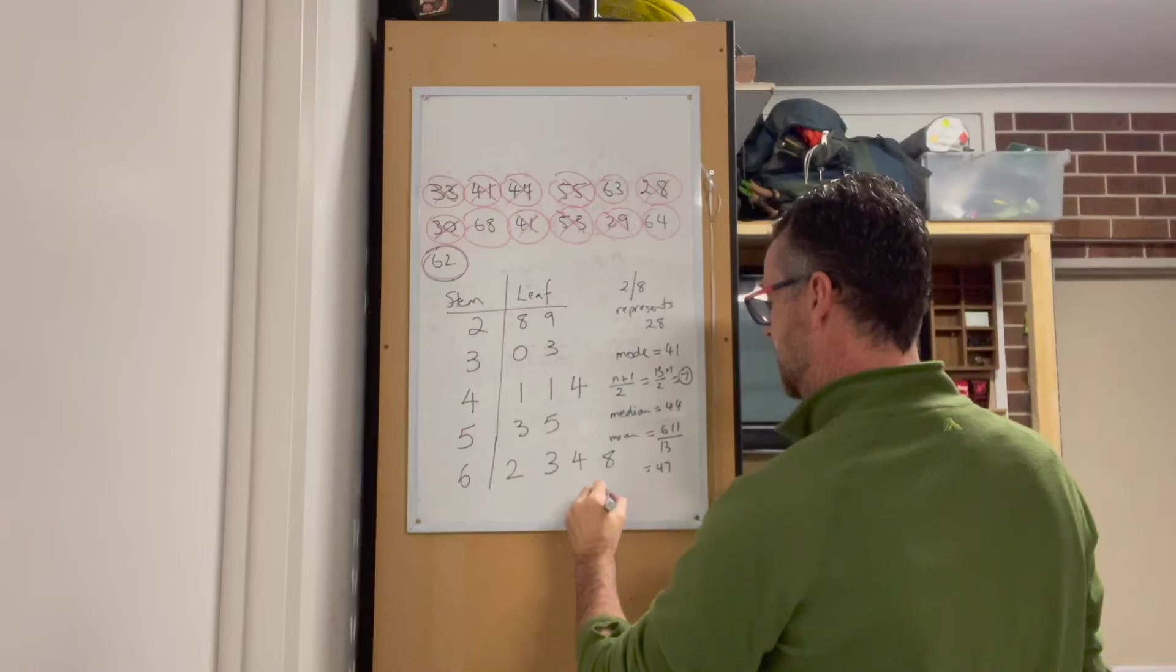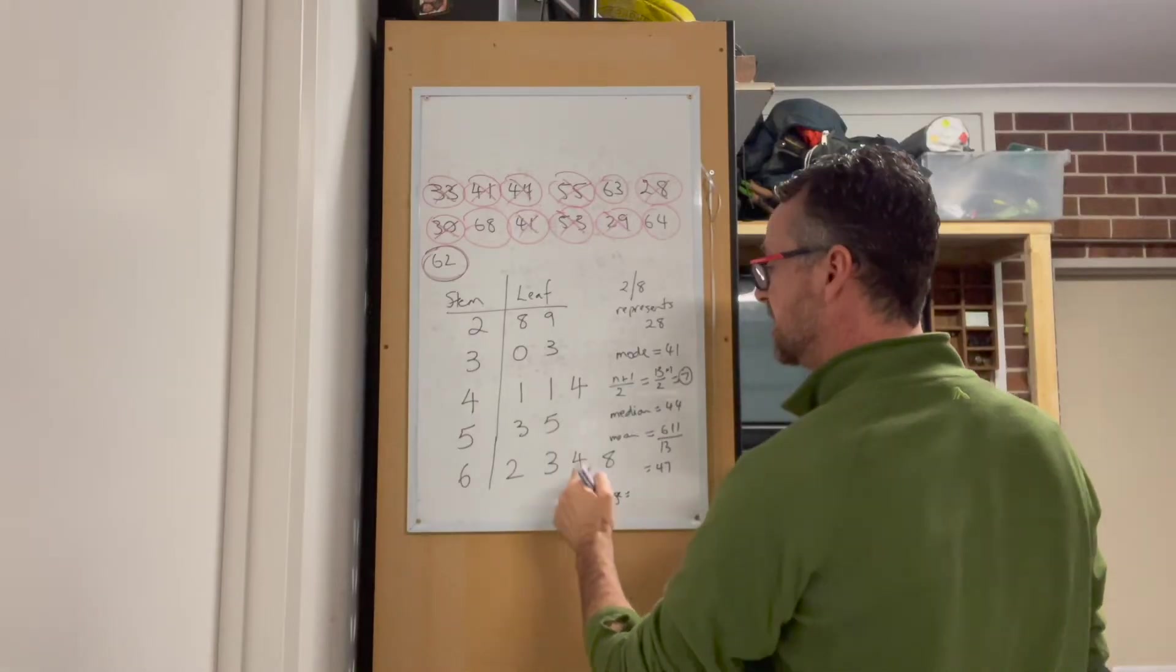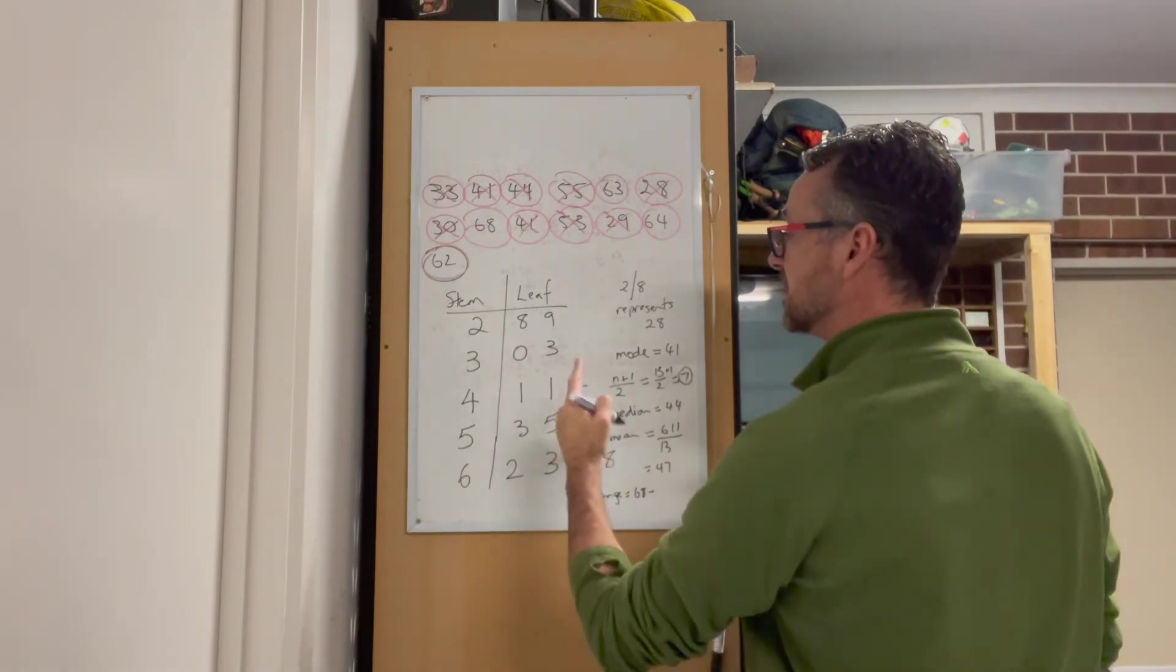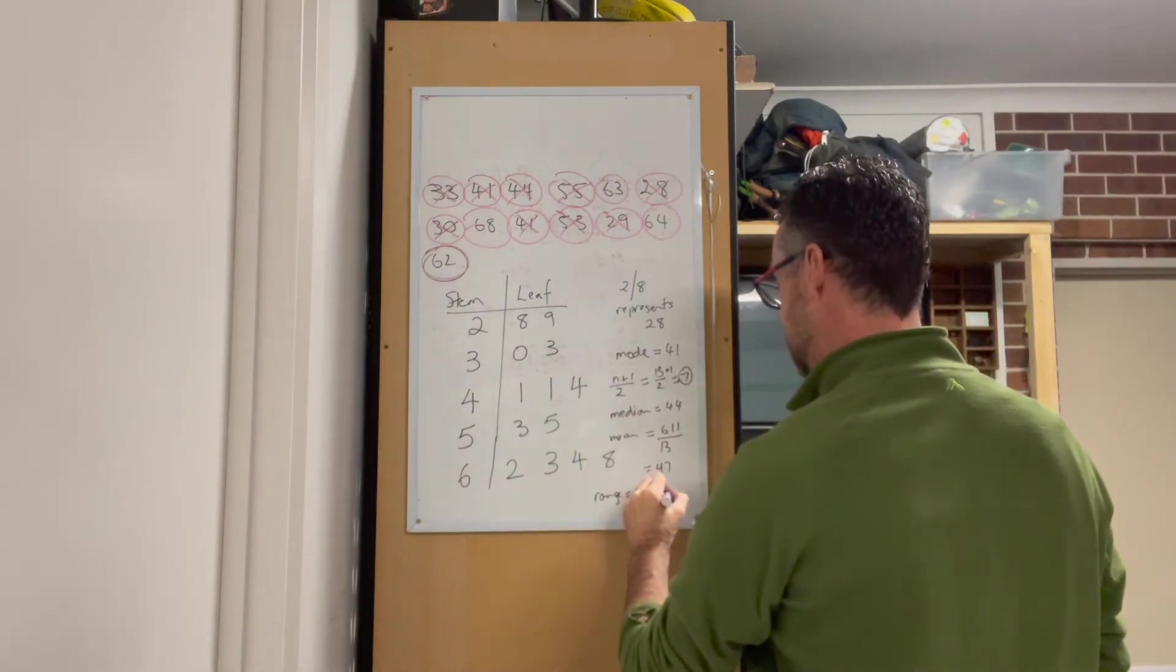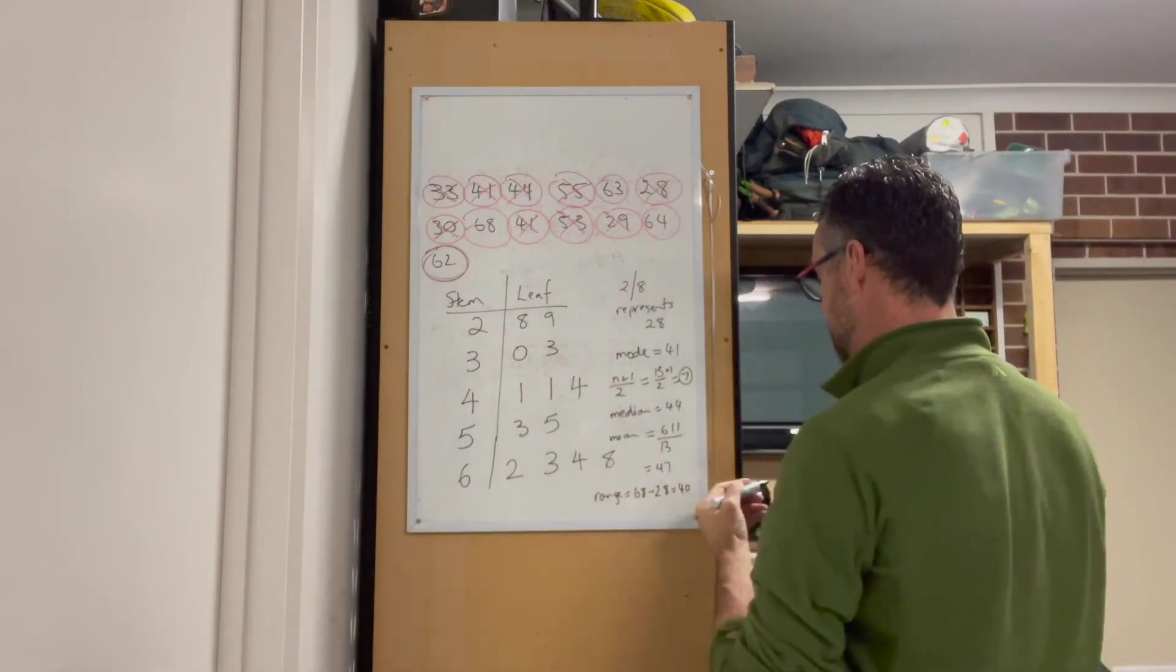Lastly, calculate the range. The range is the highest value, which is 68, minus the lowest value, which is 28. That gives us a range of 40.